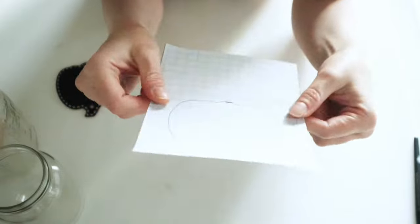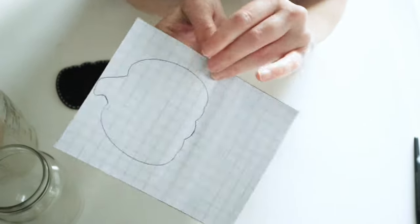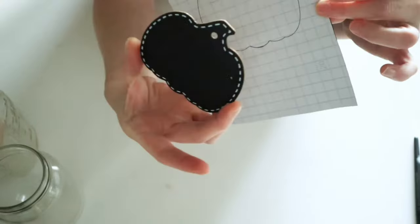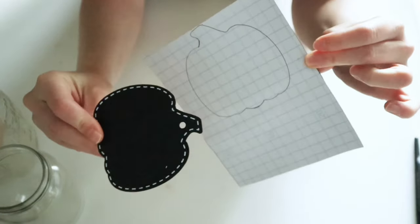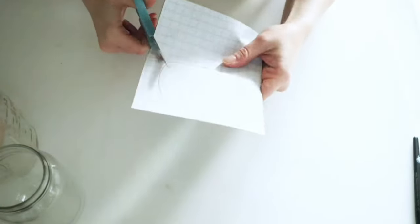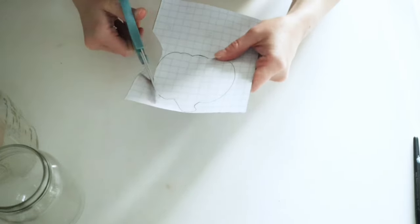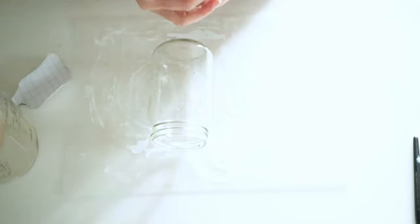Now you'll also need a piece of this chalkboard sticker from Dollar Tree. And I just used one of these little pumpkins from Dollar Tree and traced it around onto the chalkboard sticker. And that's what I'm going to be using to put on the little mason jar.